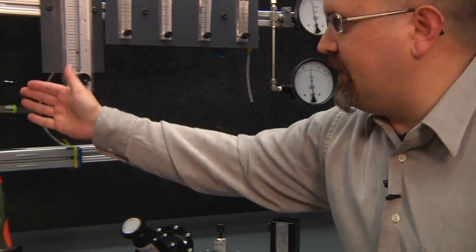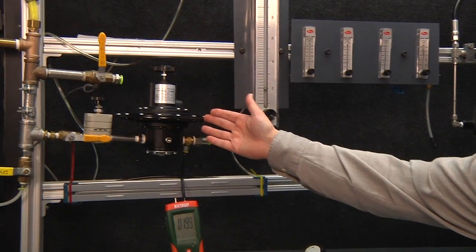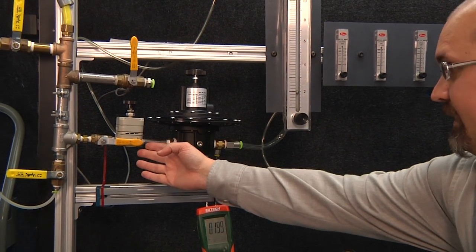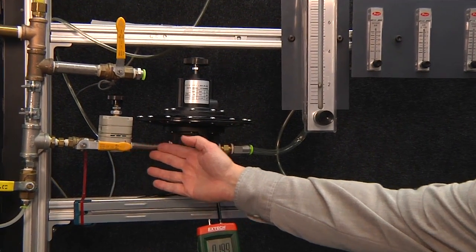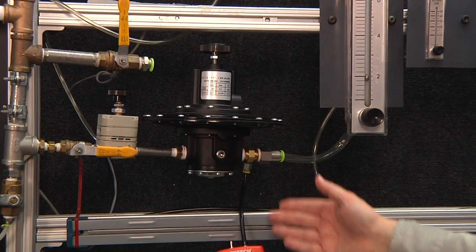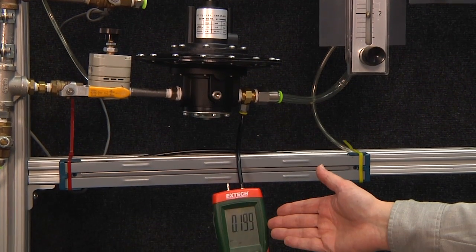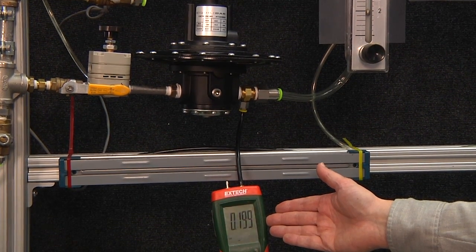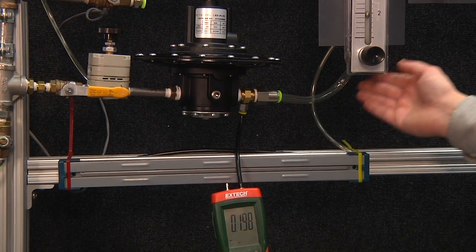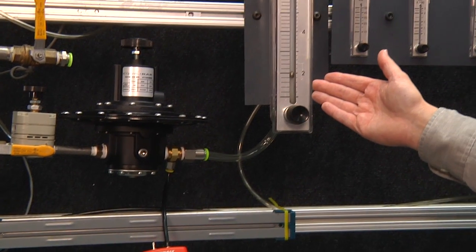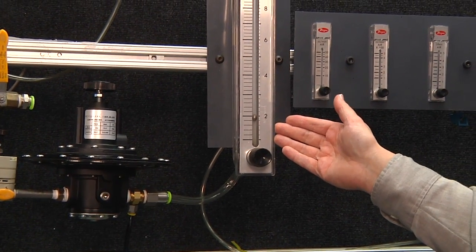I've actually got one in operation right here. This Equilibar regulator has standard industrial shop air being supplied to it. It's got a 0.2 psi setpoint, that's about six inches of water column, and it's controlling at a flow rate of about two SCFM at a fairly high flow.